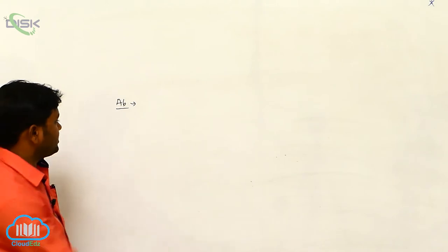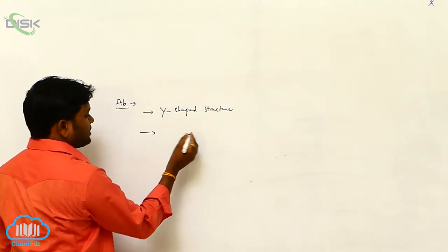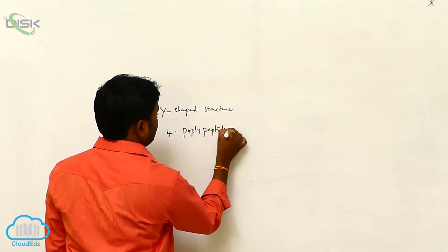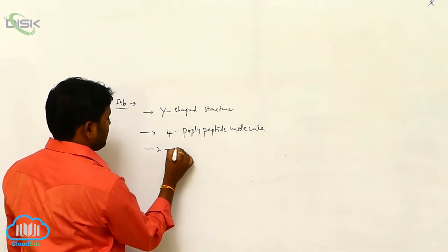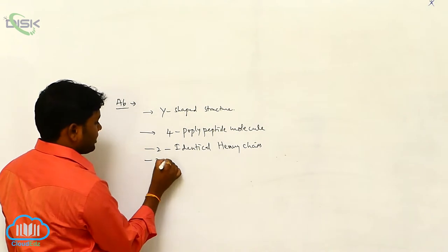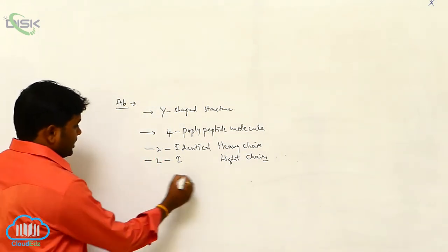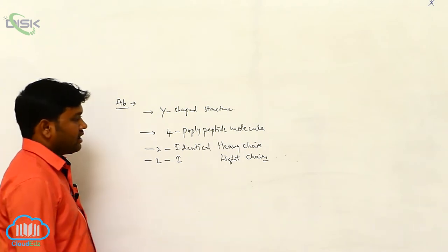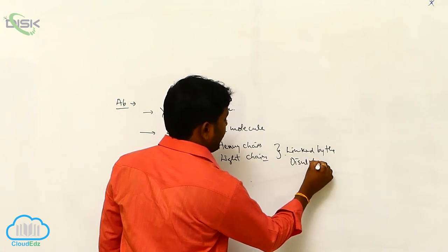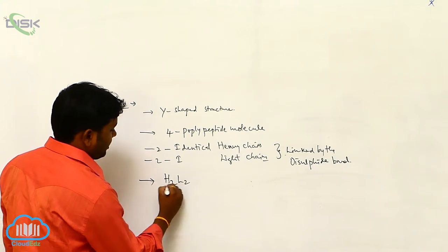Generally, the antibody is in a Y-shaped structure. It is a molecule of 4 polypeptides — two identical heavy chains and two identical light chains. These chains are linked by disulfide bonds, and the antibody is represented as H2L2.